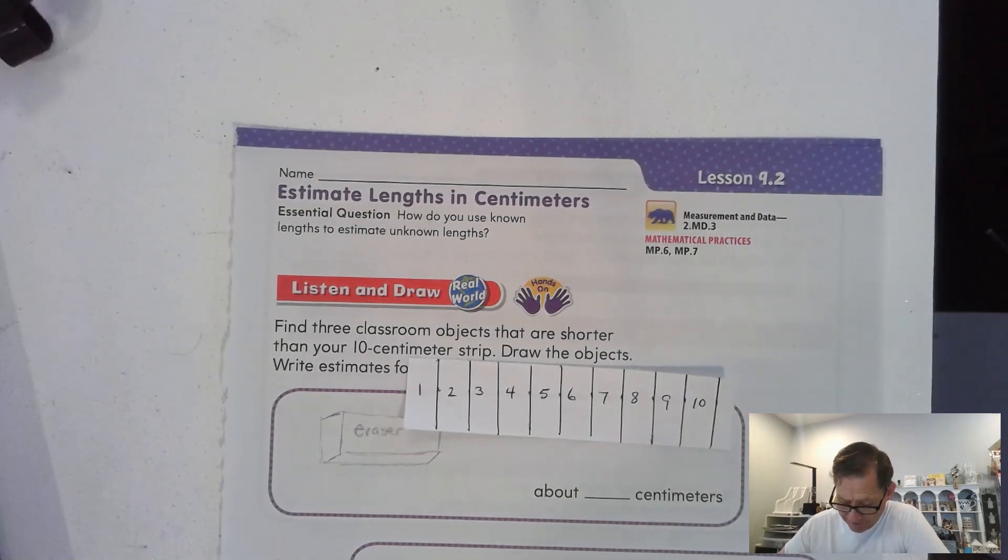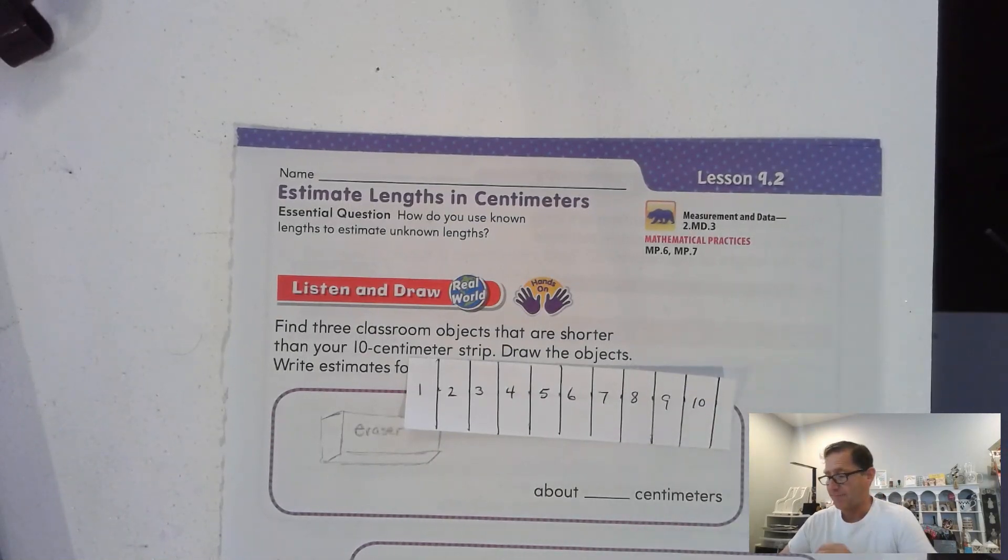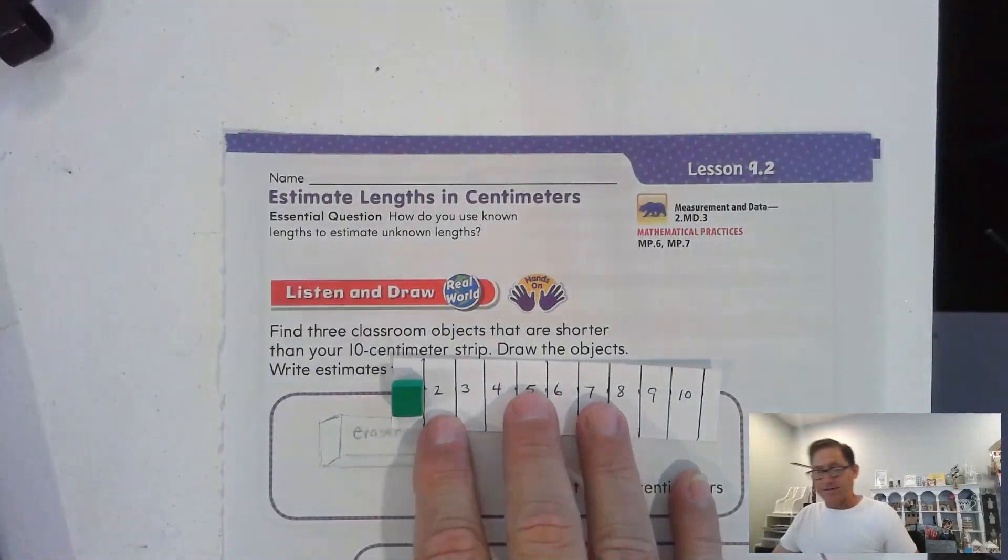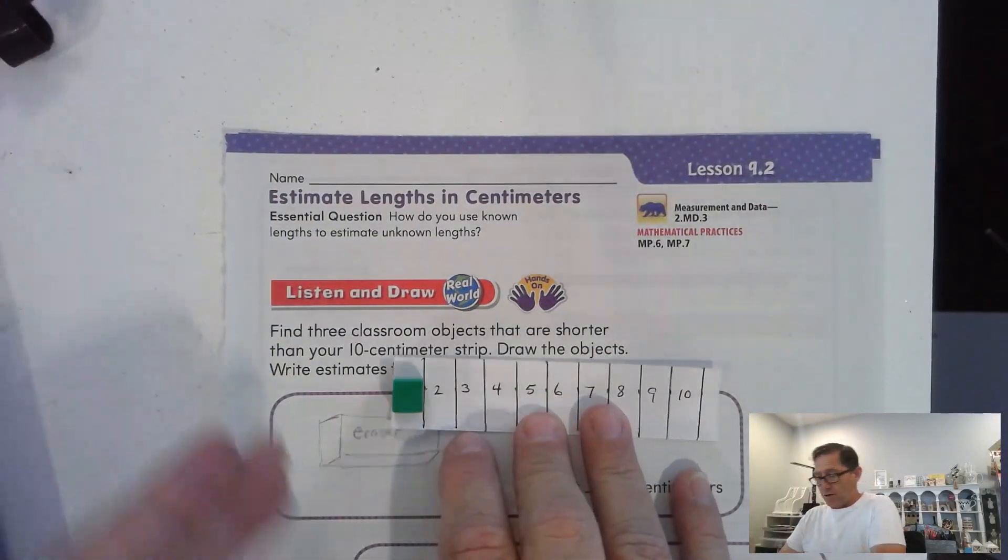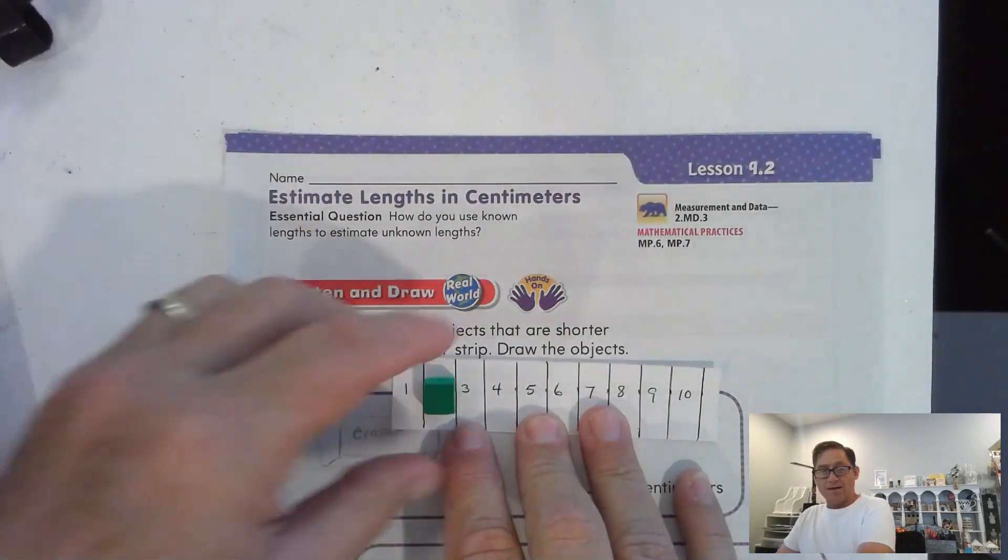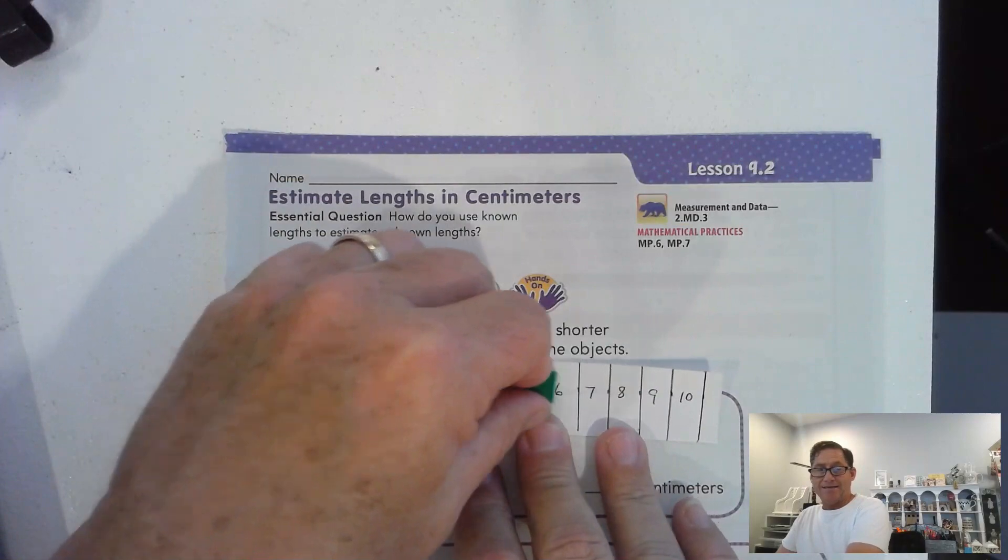So to start this, I want you to get a small strip of paper. We're going to make a simple 10 centimeter strip. I've created mine, but basically all I did was get the unit cube, draw a line, move it to the right, draw a line, and so on until I had 10.